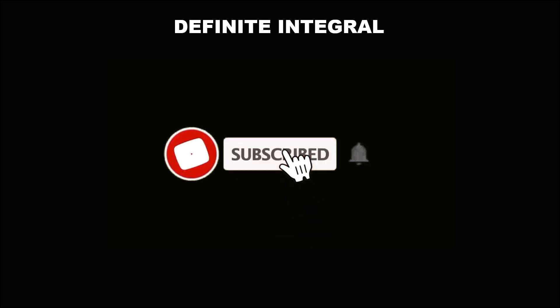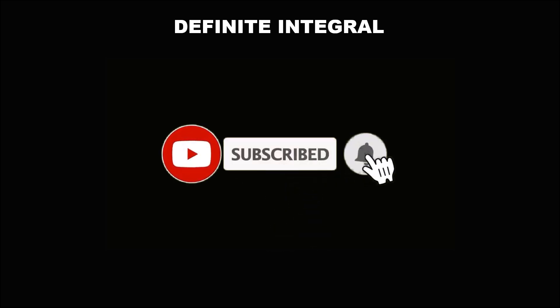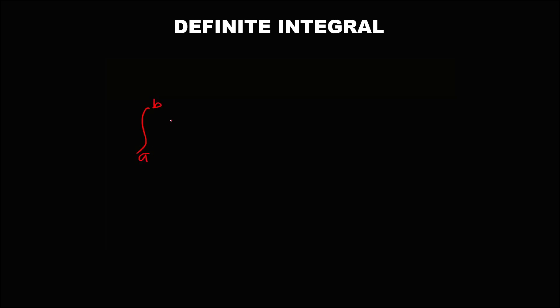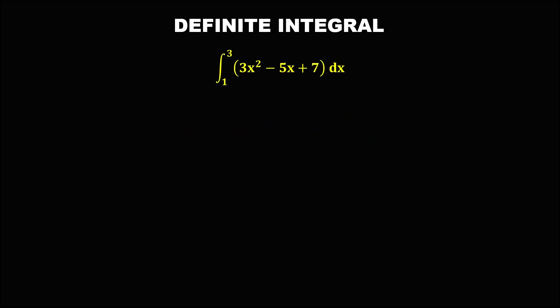Let's look at this problem. For a definite integral, if we have the integral with a lower limit and an upper limit of a function, this is equal to f(b) minus f(a) — the upper limit minus the lower limit.